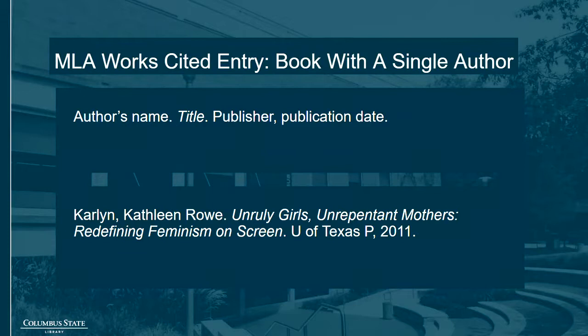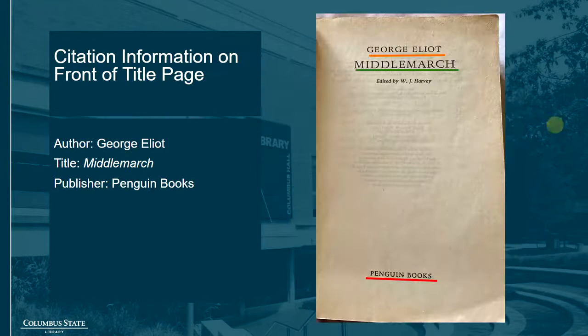The format for citing a book with one author looks like this. Begin with the author's name in a last-name-first format followed by a period, then give the title of the book in italics followed by another period. Finally, give the name of the publisher and the date of publication, separated by a comma, and end the whole thing with a period.